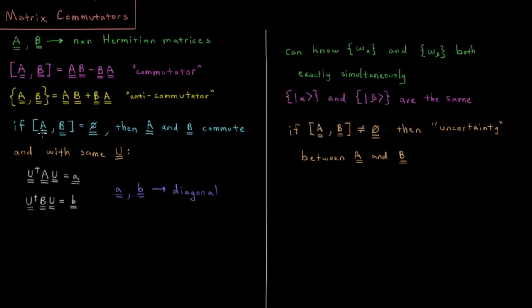So if I have my commutator of A and B and if that equals a zero matrix, so every element of the matrix is equal to zero, so you have n by n zeros in each of your columns and rows, then the commutator is equal to zero and you have what is called A and B commuting. So if the commutator is equal to zero, then A and B commute.